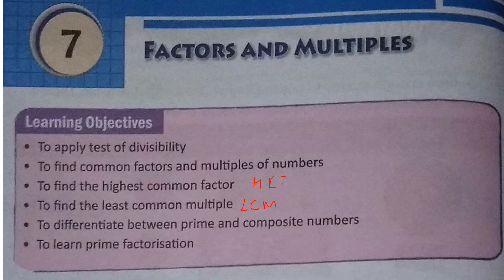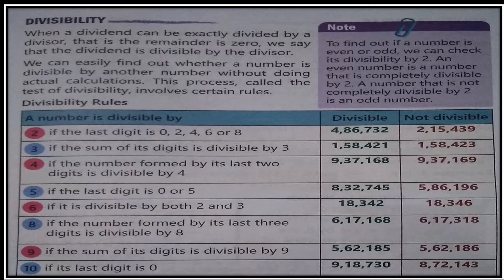Let's start with the test of divisibility. It is very easy to find out whether a number is divisible by 6, because we know that if the last digit is 0, 2, 4, 6, or 8, the number is divisible by 2. Then we check divisibility by 3 by adding the digits: 1+8+3+4+2 = 18, and 18 is divisible by 3. So the number is divisible by 6, because it is divisible by both 2 and 3.